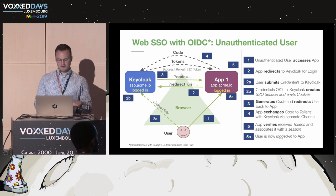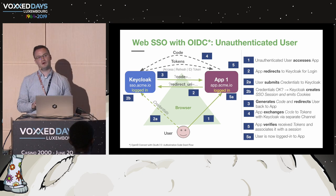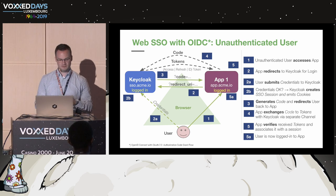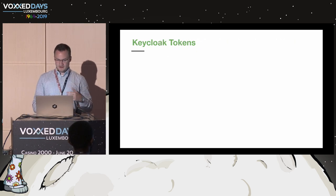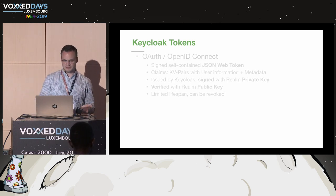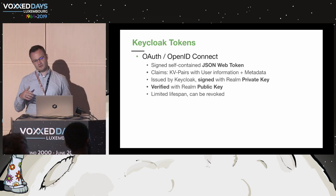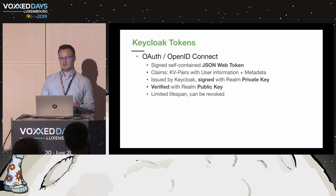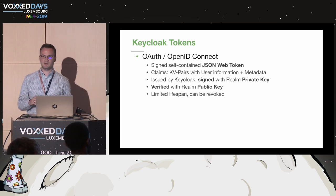What we just saw is the OpenID Connect variant with the OAuth 2 authorization code flow — the so-called three-legged OAuth. The tokens that Keycloak uses are OAuth/OpenID Connect-based tokens in the form of JSON web tokens — more specifically, signed, self-contained JSON web tokens. The tokens are signed with the realm private key and can be verified with the realm public key, which is publicly accessible to all client applications.